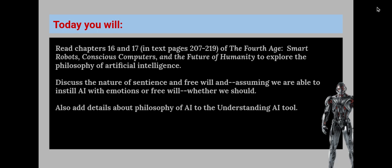Today you will read Chapters 16 and 17 of The Fourth Age: Smart Robots, Conscious Computers, and the Future of Humanity to explore the philosophy of Artificial Intelligence. You will discuss the nature of sentience and free will and, assuming we are able to instill AI with emotions or free will, whether we should. You will also add details about philosophy of AI to the Understanding AI tool.